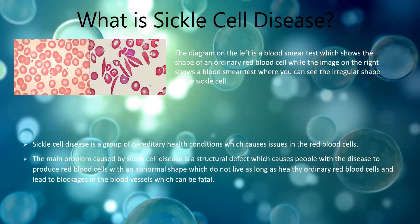What is sickle cell disease? Sickle cell disease is a group of hereditary health conditions which causes issues in the red blood cells. An example is sickle cell anemia, which is the most well known and most serious type of sickle cell disease. The main problem caused by sickle cell diseases is a structural defect which causes people with the disease to produce red blood cells with an abnormal shape, which do not live as long as healthy red blood cells and can lead to blockages in the blood vessels that can be fatal. This disease, though unusual, affects the large sum of 100 million people worldwide.